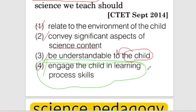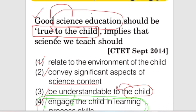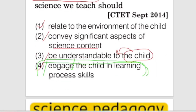In science, you can always engage the child in learning process skills. You can always learn practical lab activities, project works. You can always develop process skills. If you engage the child in learning process skills, you can automatically develop good science education. So option 4 is correct.